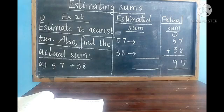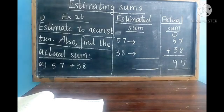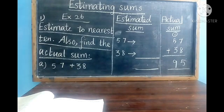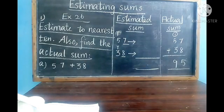To find the nearest 10 of 57 and 38: write T above the digit in the tens place and underline the digit in the ones place. In 57, 5 is at the tens place and 7 is at the ones place — underline 7 and write T above 5. In 38, 3 is at the tens place and 8 is at the ones place.